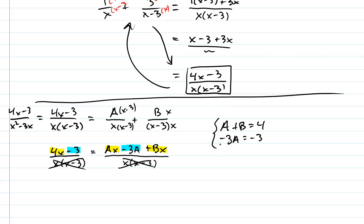Now, normally we would have a more complicated system, but it turns out that if you just solve this, you get A right away. So, A is going to be 1. And then you can plug it in right here to figure out that B is equal to 3.